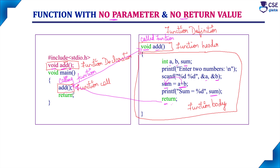Once execution is over, the main function returns control to the operating system and the program execution is completed. In this session, we discussed the first category of function — function with no parameter and no return value. In the next session, we will discuss the second category of function, which is function with parameters but no return value.